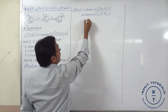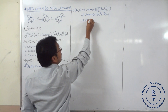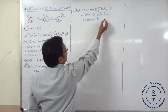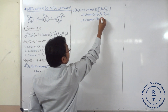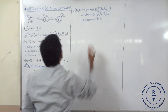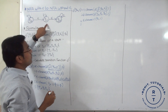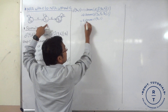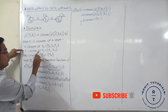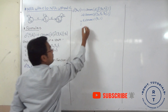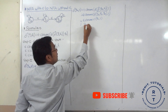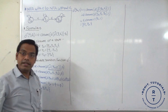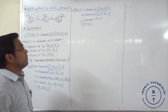Epsilon closure of transition Q1 with input 1. For Q1 with input 1 the result is Q1, and for Q2 with input 1 there is no transition, so the state is {Q1, Q2}.